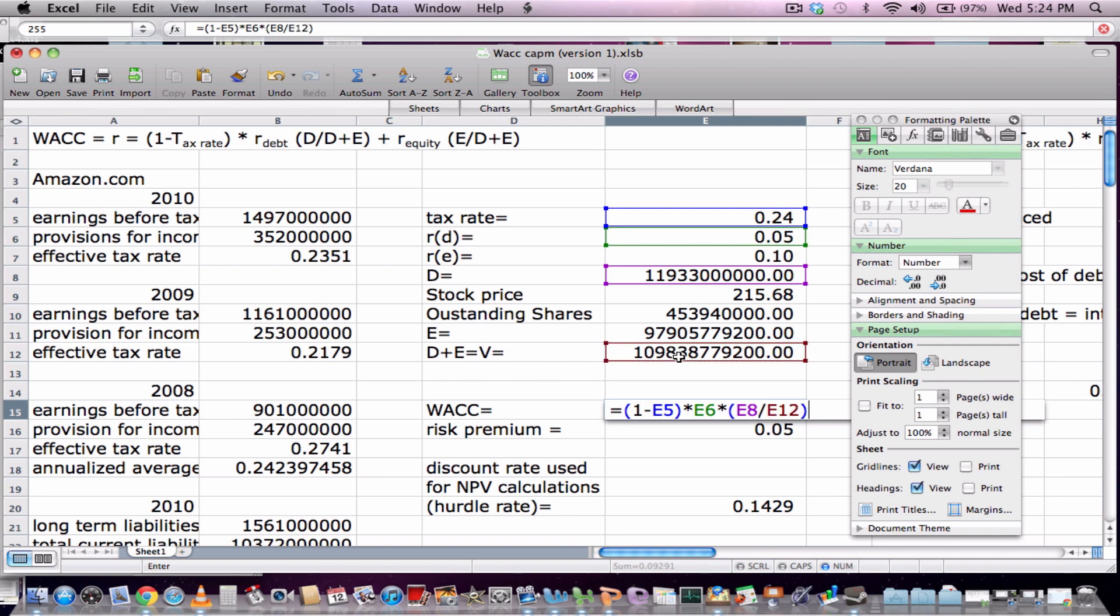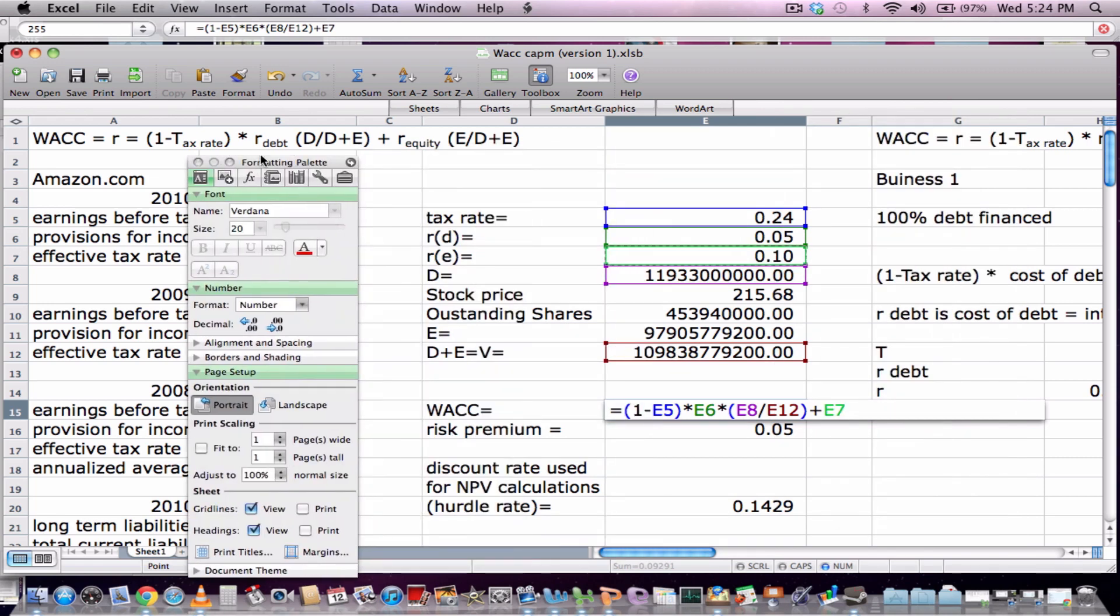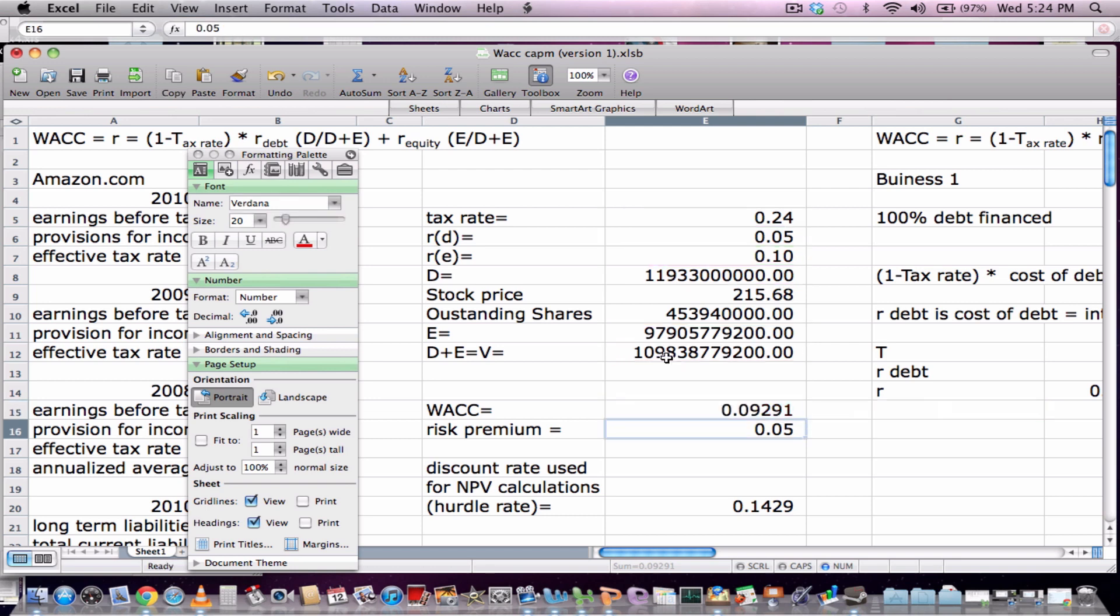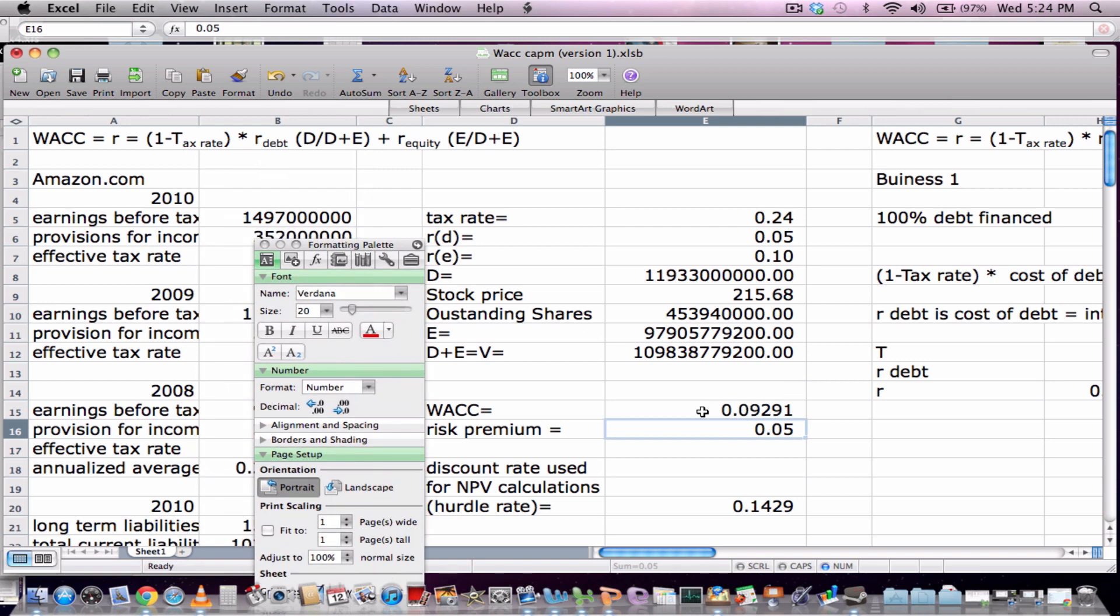Plus the return required by investors, the R_E, times the amount of total equity divided by the total value of the firm. And so we find that the weighted average cost of capital for Amazon.com is pretty close to 9%.